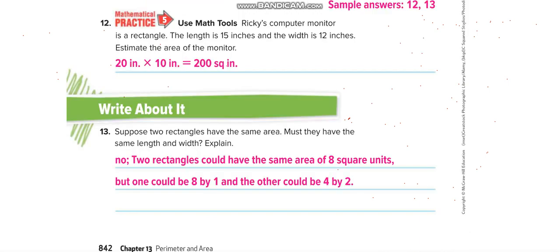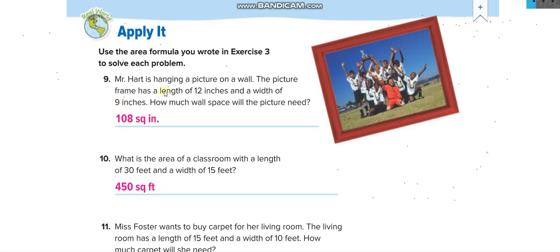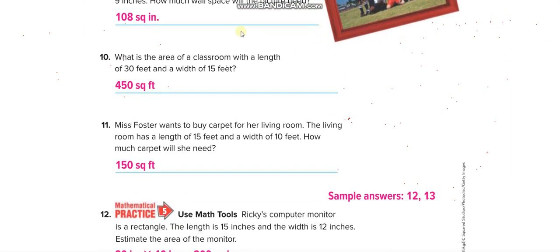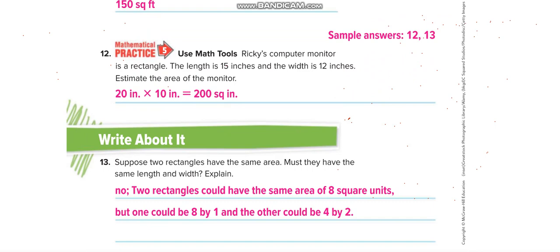For the word problems: a picture frame is 12 × 9 inches, so the area is 108 square inches. The area of the classroom is 30 × 15 = 450 square feet. A carpet for a living room is 15 × 10 = 150 square feet. All units are squared because we are finding how many square units fit inside.